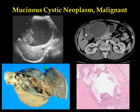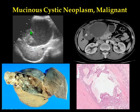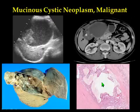This is a case of malignant mucinous cystic neoplasm, which contains large irregular tumor nodules. There are no septa, but it is filled with debris and hemorrhage. This part is the tumor itself, and this part is filled with mucin.